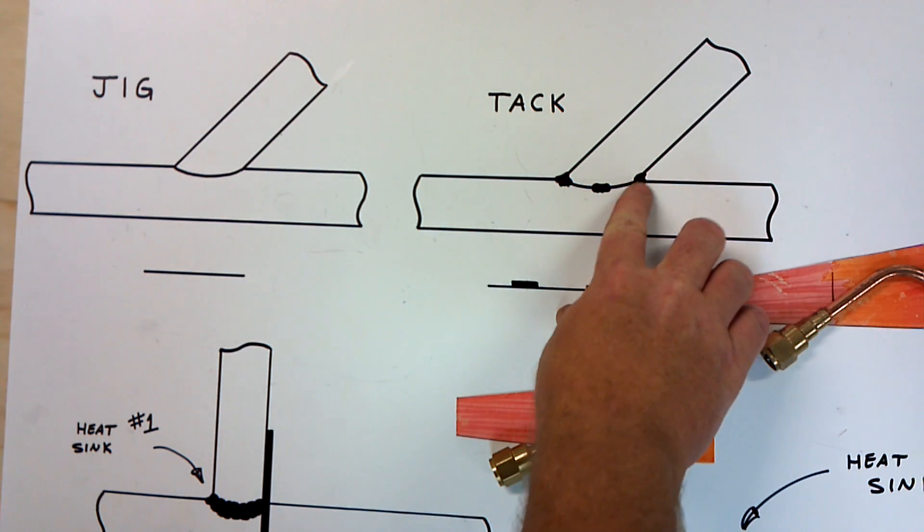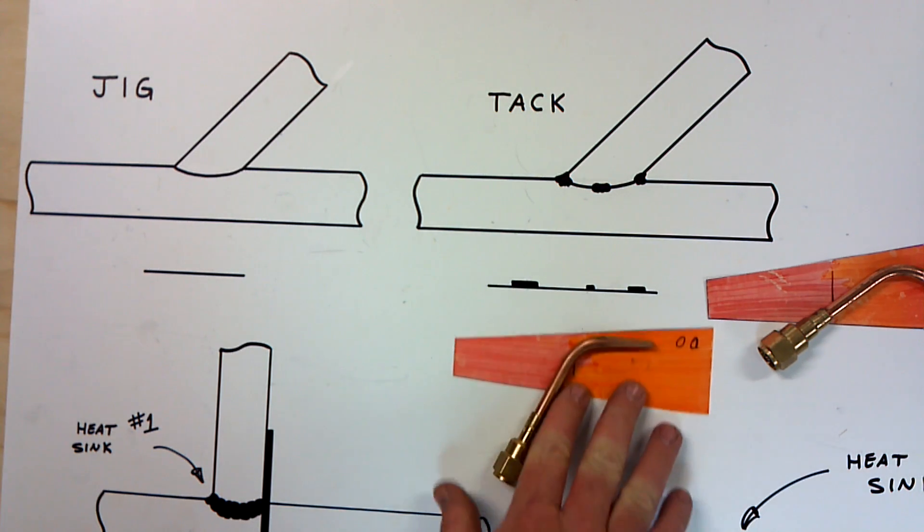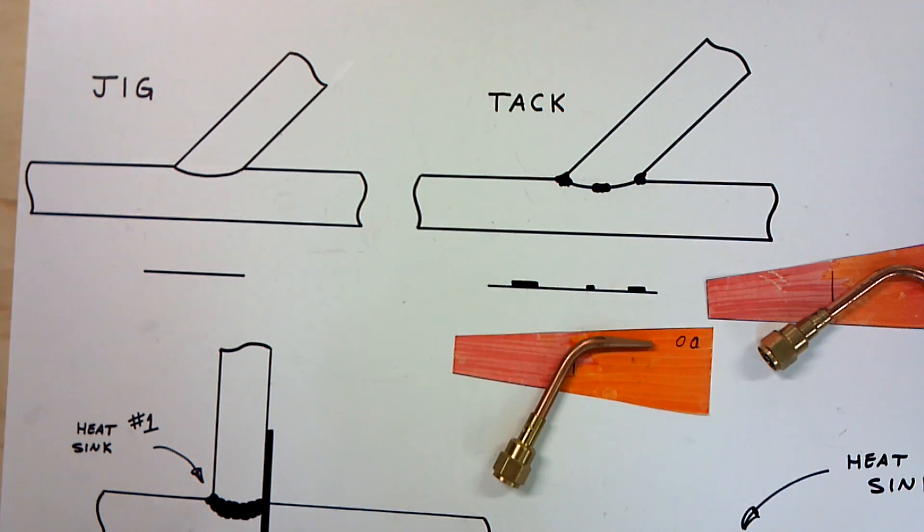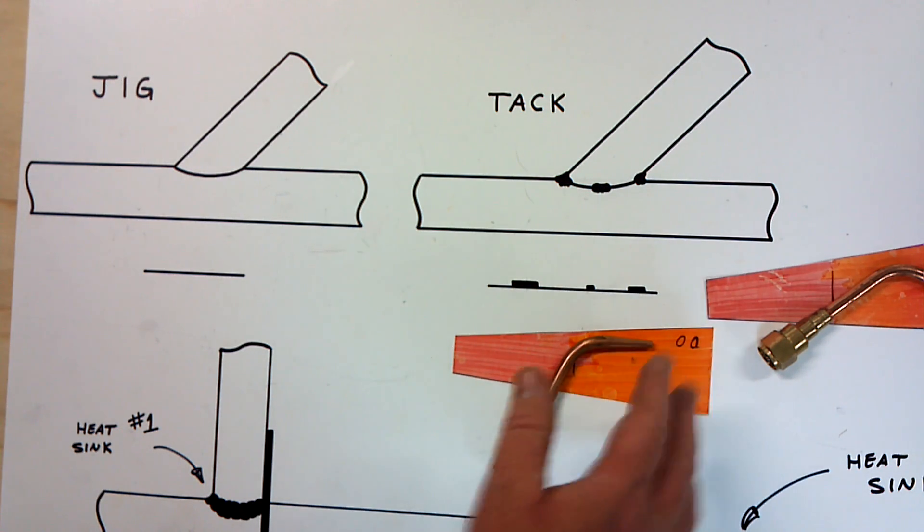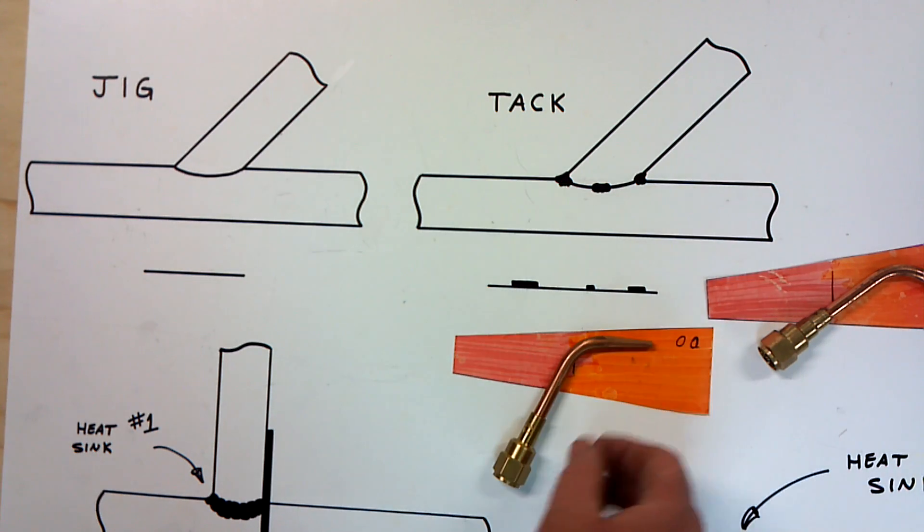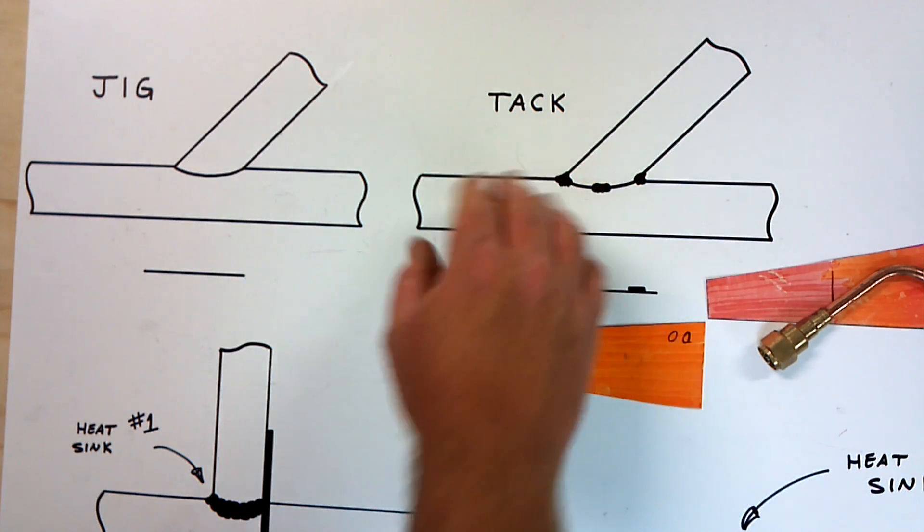If you remember in one of the videos I said I like to put really big tack welds in. The reason for that is simply the tip. I know that when it comes time to welding, I kind of want to use one tip instead of changing back and forth the tips, because I know that with one tip I can increase the range a little bit and kind of figure this out.